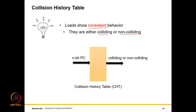How do we find collisions? We use the same standard template from branch prediction. Some loads show consistent behavior — they can be predicted as colliding or non-colliding. We have a collision history table (CHT) which takes an N-bit program counter. It points to an entry, same as a branch predictor, and predicts whether the load is colliding or non-colliding. Here you can have a single bit or a saturating counter to handle occasional anomalies.